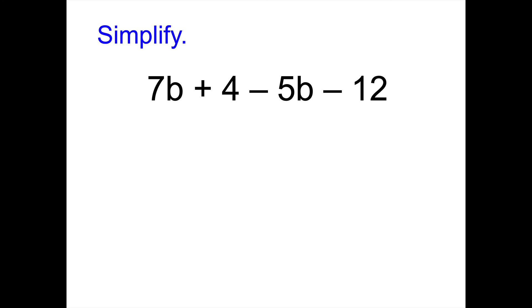Please simplify this one. Okay. So we had 7b plus 4 minus 5b minus 12. So we can combine 7b and negative 5b equals 2b, and we have positive 4 and negative 12 equals negative 8.